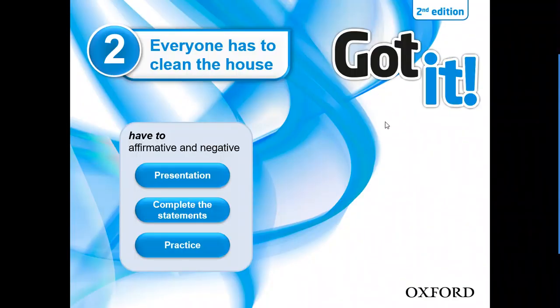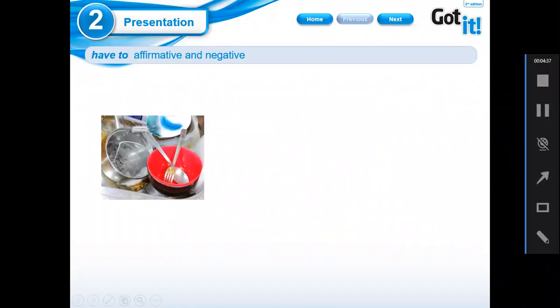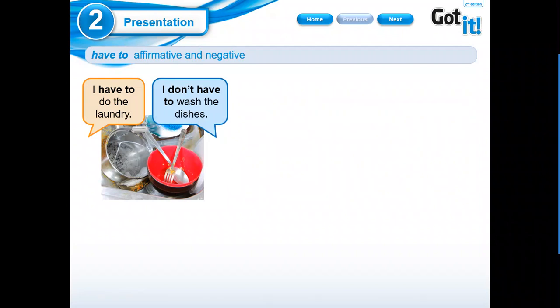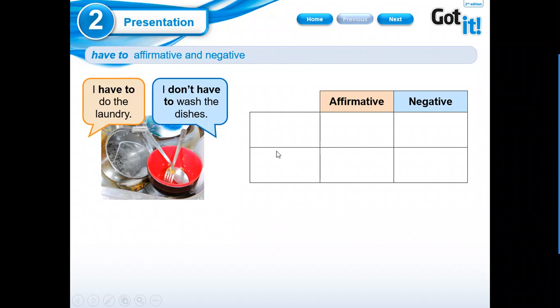Now look at here, we have our PPT. Everyone has to clean the house. 'Have to' affirmative and negative. We're going to start with this presentation with the same information that I gave you before. Look at here. But we're going to do it together. Example: I have to do the laundry. Tengo que lavar. I don't have to wash the dishes. No tengo que lavar los platos. We're going to complete this chart together.